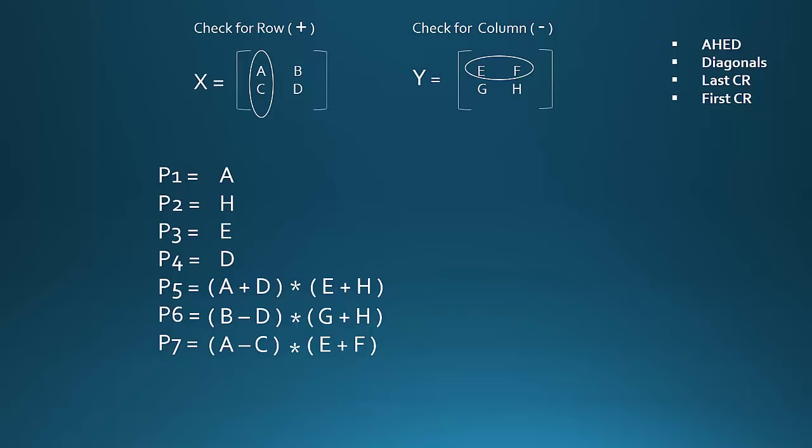Now we have to complete P1, P2, P3 and P4. Now consider P1. In P1 we have A. In other matrix the corresponding element of A is E. Since we are in Y we have to check for columns, and the opposite column is FH. Since it is a column we will write F minus H.